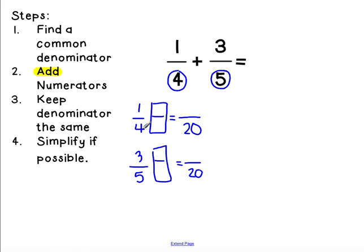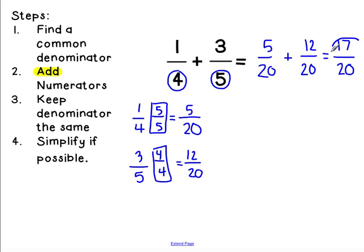I have 4 times what is 20—4 times 5 is 20. So whatever I do to the bottom, I need to do to the top. 1 times 5 is 5. And then 4 times 5 is 20, so we need to do by 4 on the top. 3 times 4 is 12. So my new problem becomes 5 twentieths plus 12 twentieths. My denominators are the same, so I can add my numerators. 5 plus 12 is 17. I'm keeping my denominator the same. 17 out of 20, I cannot simplify. So 17 out of 20 is my final answer.